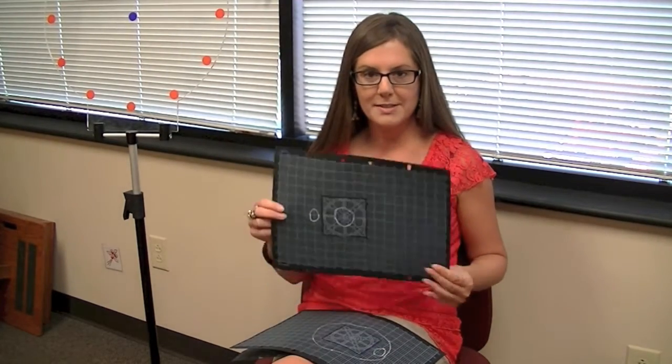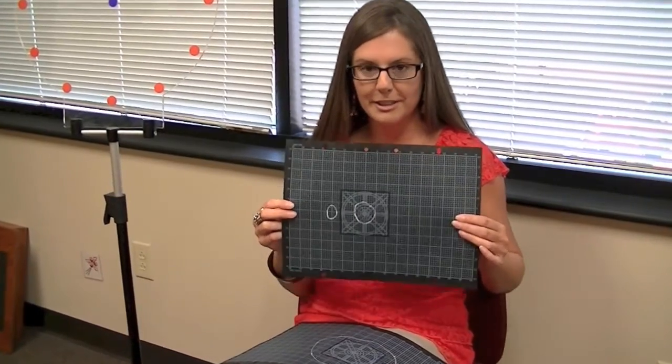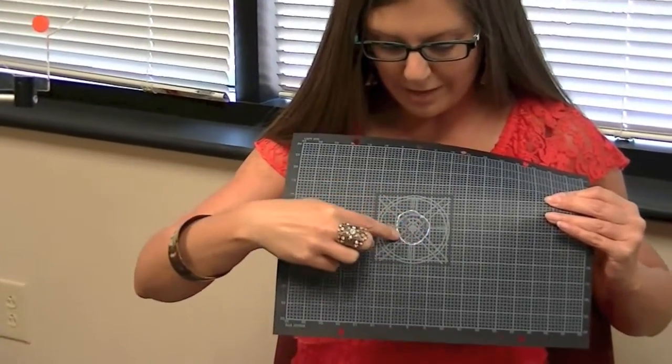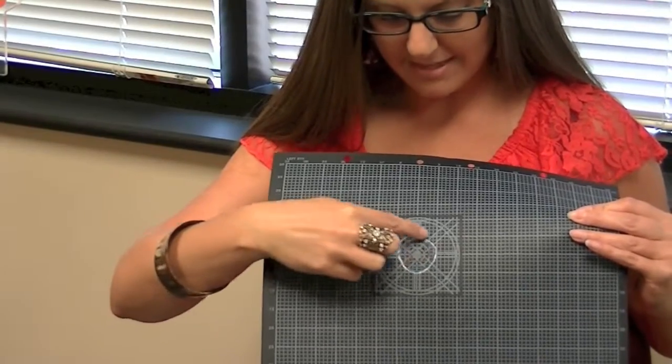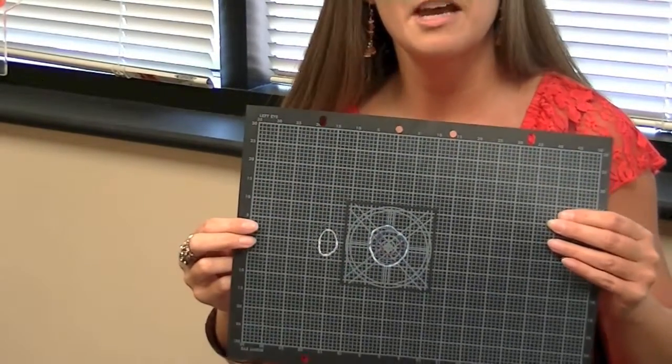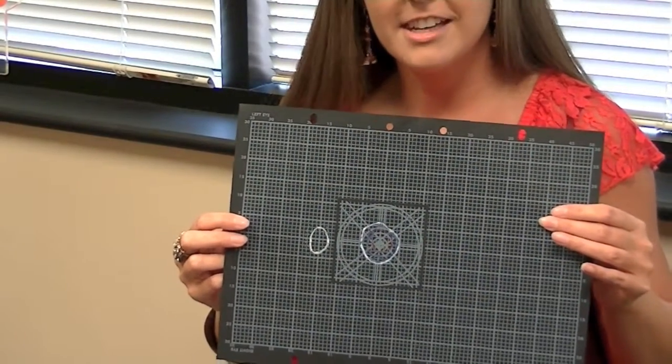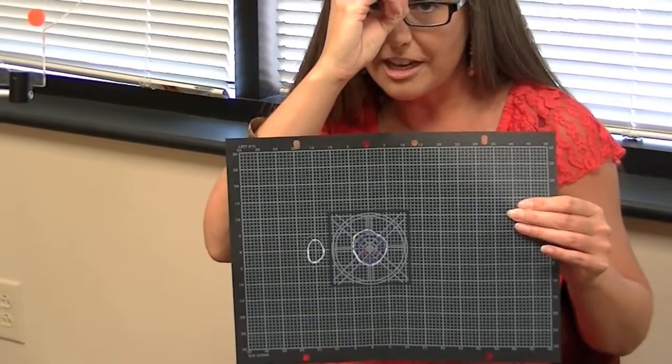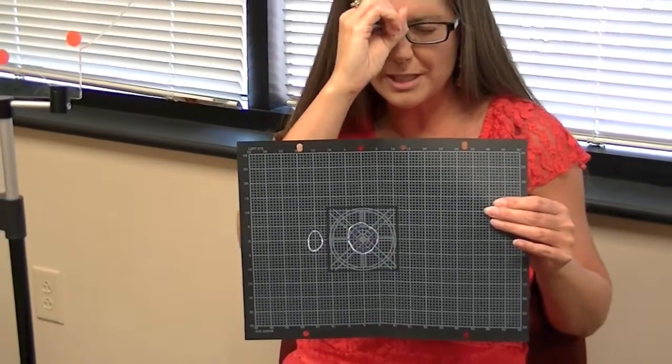When he first came in to see us at our office, he had this really teeny tiny visual field and I'll point to it right here. This spans less than 10 degrees. And so he had approximately 5 to 8 degrees of visual field, which is like putting your hand into a little tube and looking with just one eye.